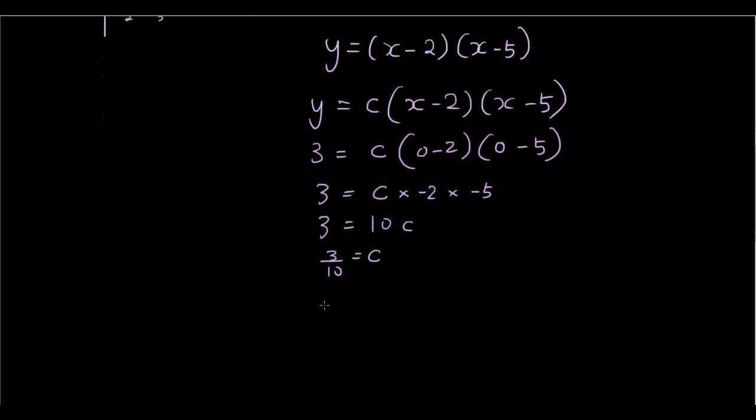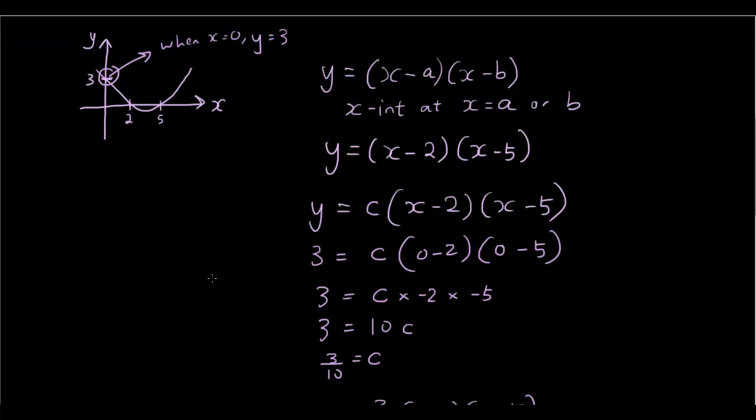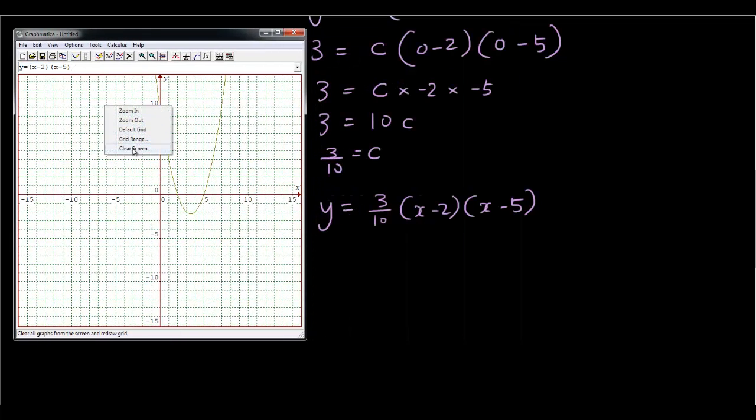So I'm now going to try typing this equation into graphmatica. y equals 3 over 10(x-2)(x-5). I'm going to see whether that is going to give me the same graph as the line that I've drawn here. Let me clear that. y equals 3 over 10. Notice I'm putting 3 over 10 in brackets, (x-2)(x-5). And if you have a look at the parabola, this is exactly the same as what we were looking for. It passes through the y-axis at 3 and the x-intercepts are at x equals 2 and x equals 5.